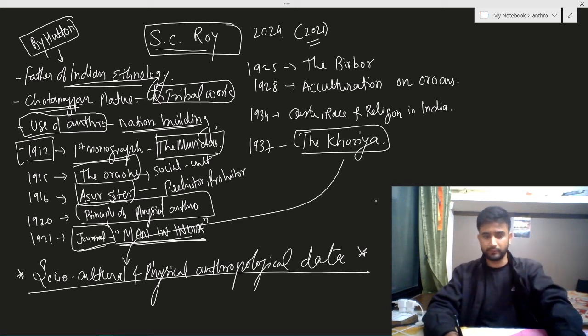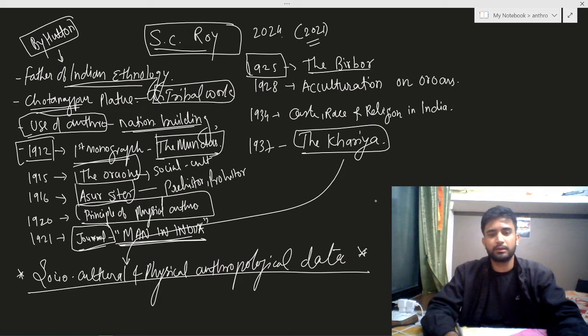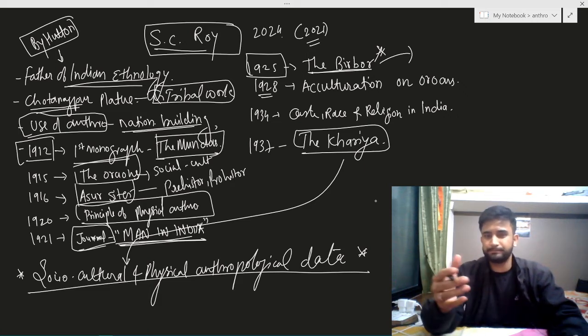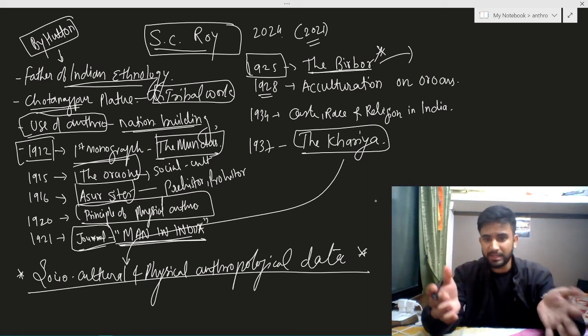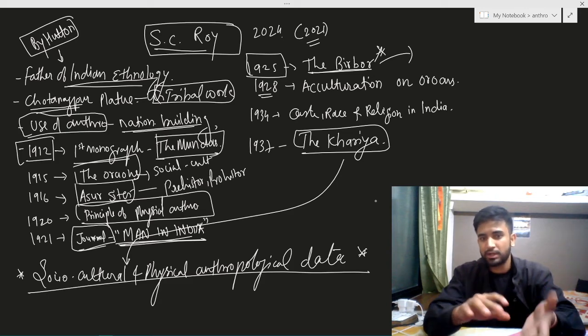Man in India is one of the most renowned journals as far as anthropology is concerned. In 1925 he published a monograph on Birgore. In 1928, the focus was on verbal and non-verbal communication in culture or society. The Birgore community was responsible for S.C. Roy to bring these things out.